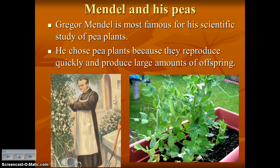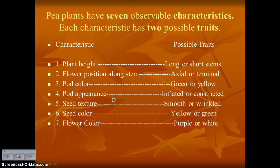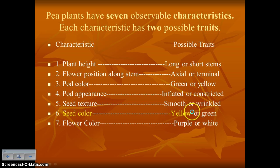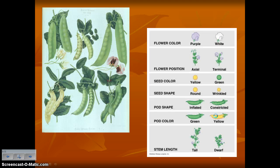His most famous work is with pea plants. He chose pea plants because they reproduce quickly and produce a large amount of offspring, meaning he could get a great deal of data in a short period of time. He noticed that pea plants have seven observable characteristics, and each characteristic has two possible traits. For example, plant height has traits of long or short stems; seed color has traits of yellow or green seeds.